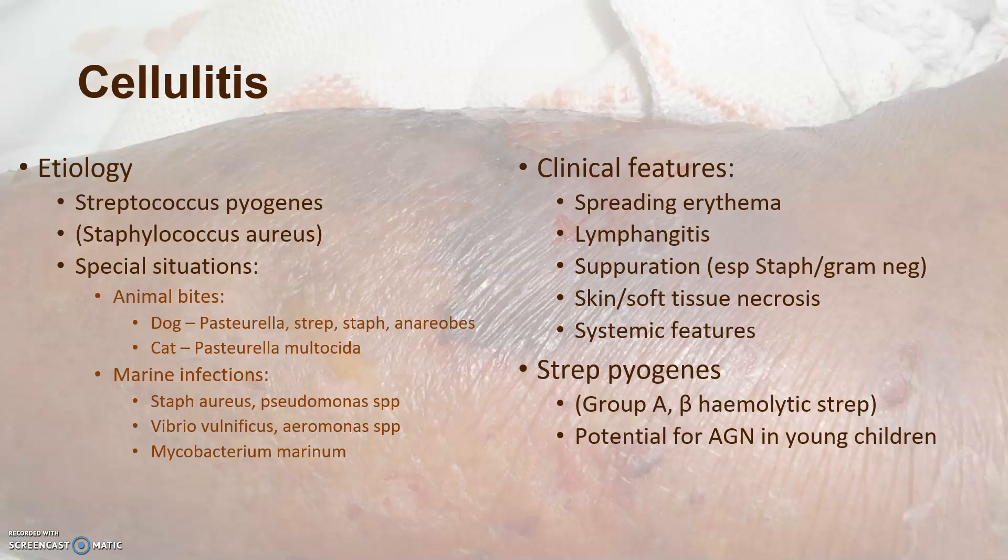Strep pyogenes, as we said, is group A beta-hemolytic strep. One important complication is the potential for acute glomerulonephritis in young children — this really occurs in children up to about age seven or eight. It's not a feature of older patients. Also, throat infections with group A strep may cause rheumatic fever, whereas skin infections tend to cause acute glomerulonephritis. It's worth looking up the microbiology of Strep pyogenes and Staph aureus as part of your revision.